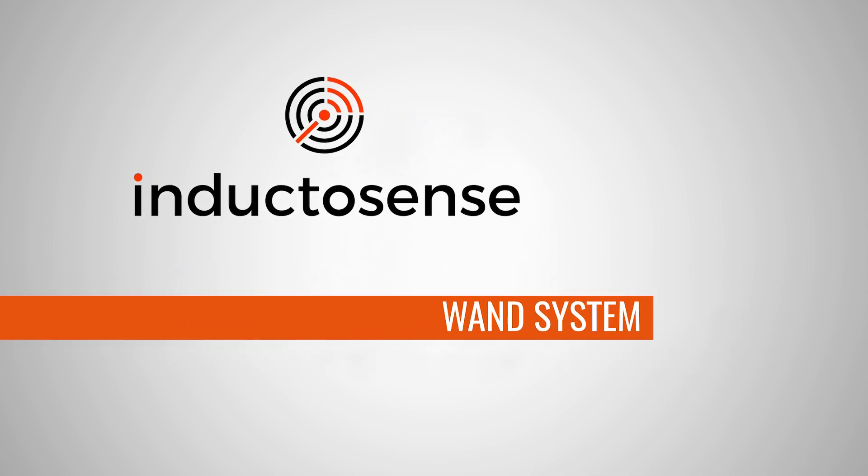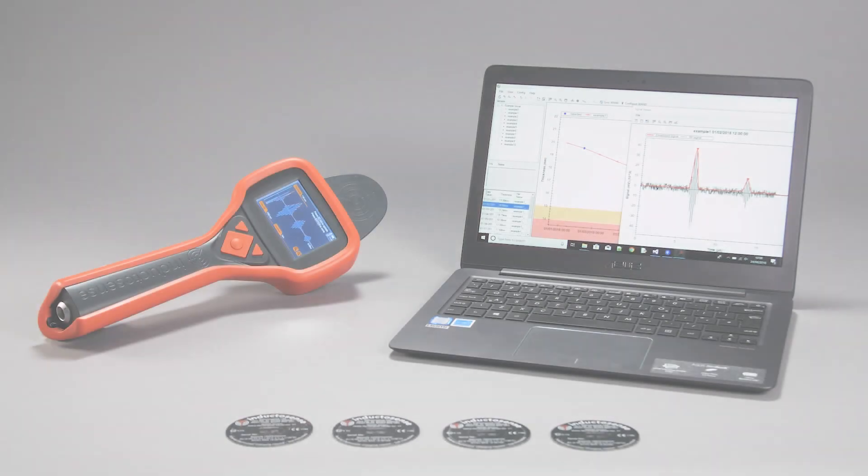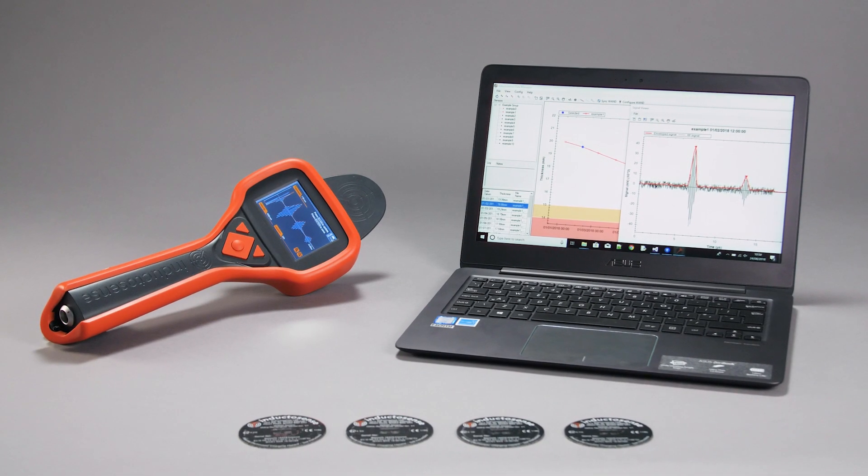The WAN system from InductorSense can be used for monitoring internal corrosion or erosion on pipework or vessels. There are three components to the WAN system.